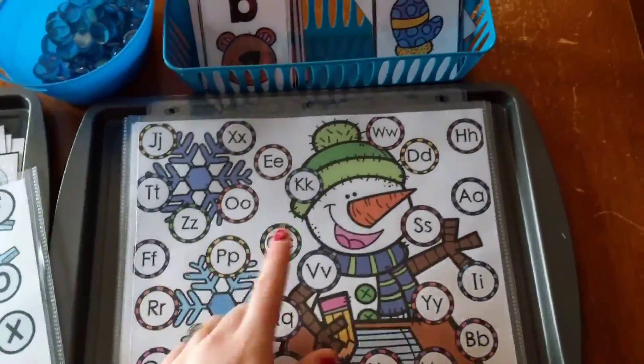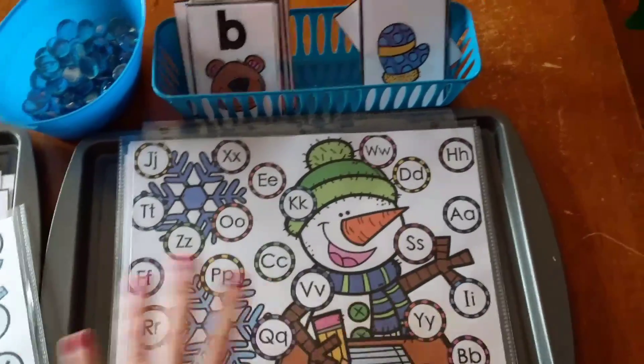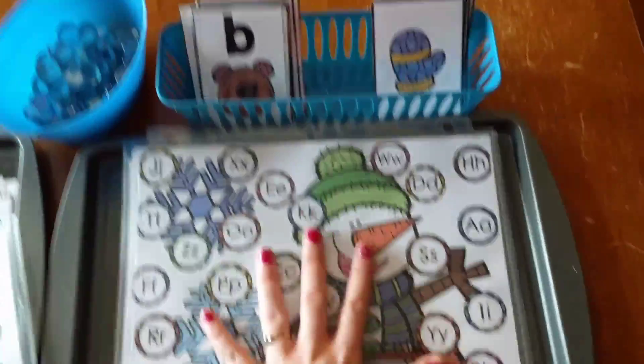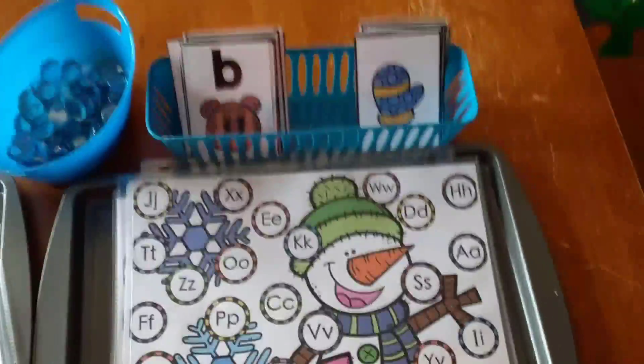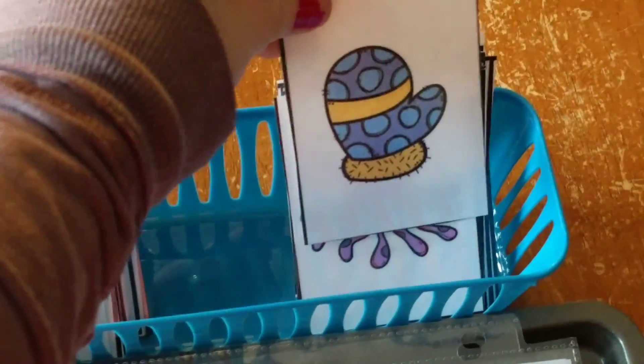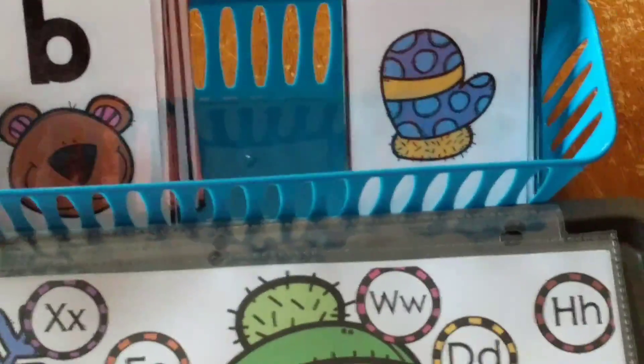Now, these last mats have both capital and lowercase letters on them. So for these ones, what he's going to do is he's going to use these cards, and he's going to practice beginning sounds. So what he will do with this is I will show him a card, or he will take a card. The first card here is a mitten. Mitten says M, M.